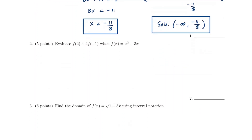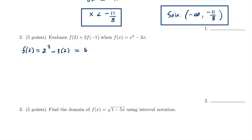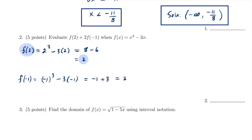Moving on to the next problem: we want to evaluate f(2) and then f(2) plus 2 times f(−1) using the given formula. So f(2) is found by plugging in 2 for x: 2 cubed minus 3 times 2, which is 8 minus 6, equals 2. Then f(−1): negative 1 cubed minus 3 times negative 1, that's negative 1 plus 3, which equals 2. So f(−1) is also 2.